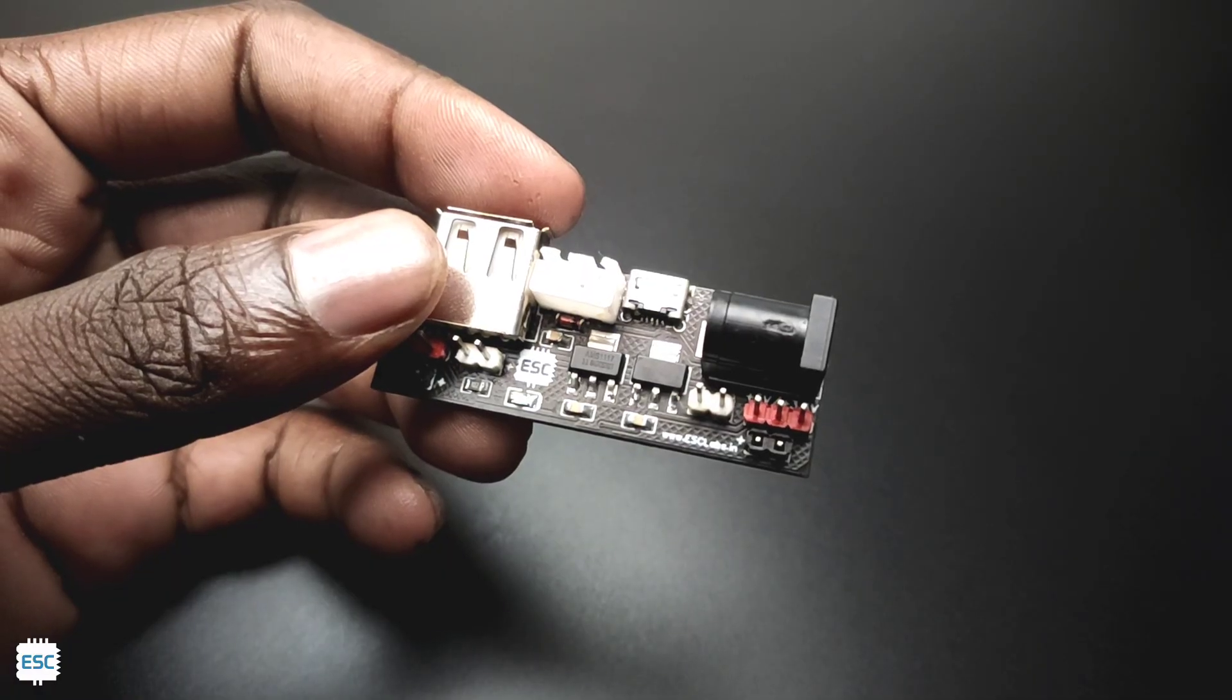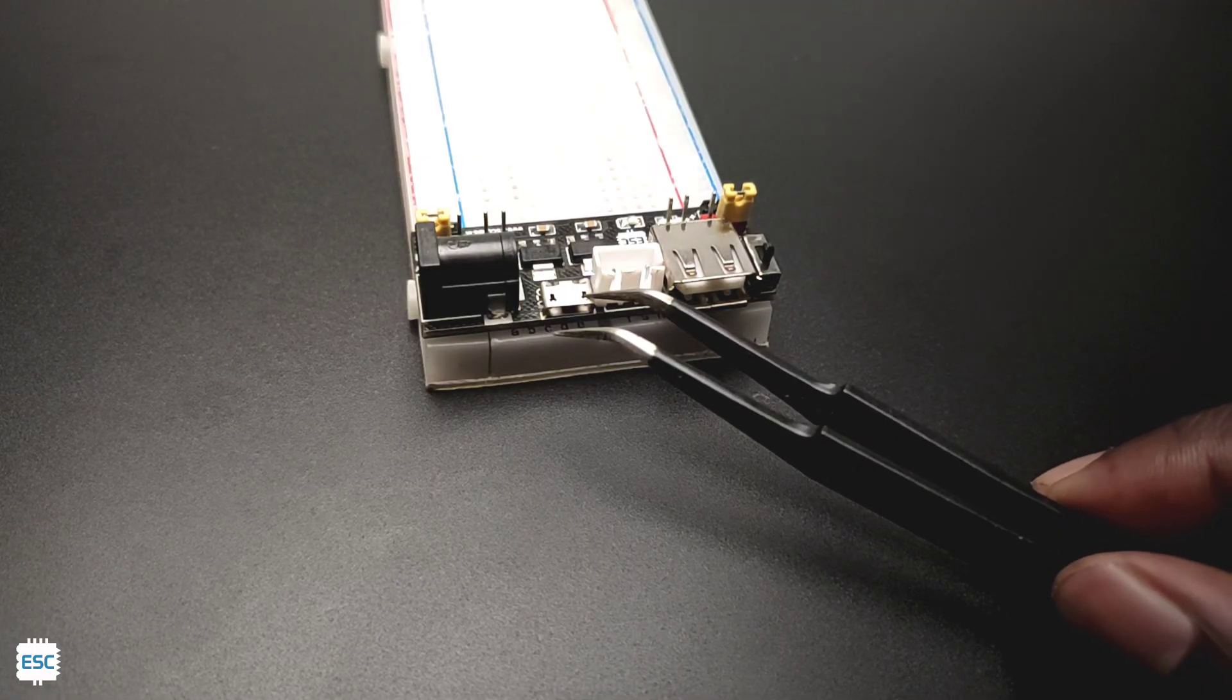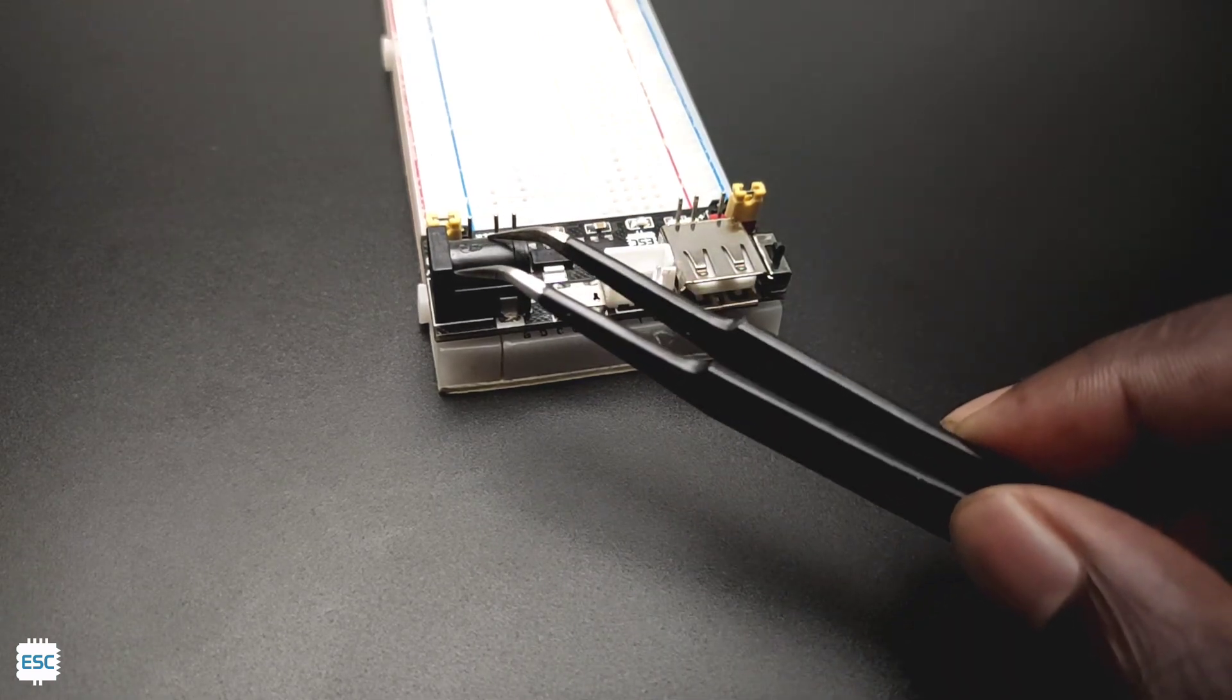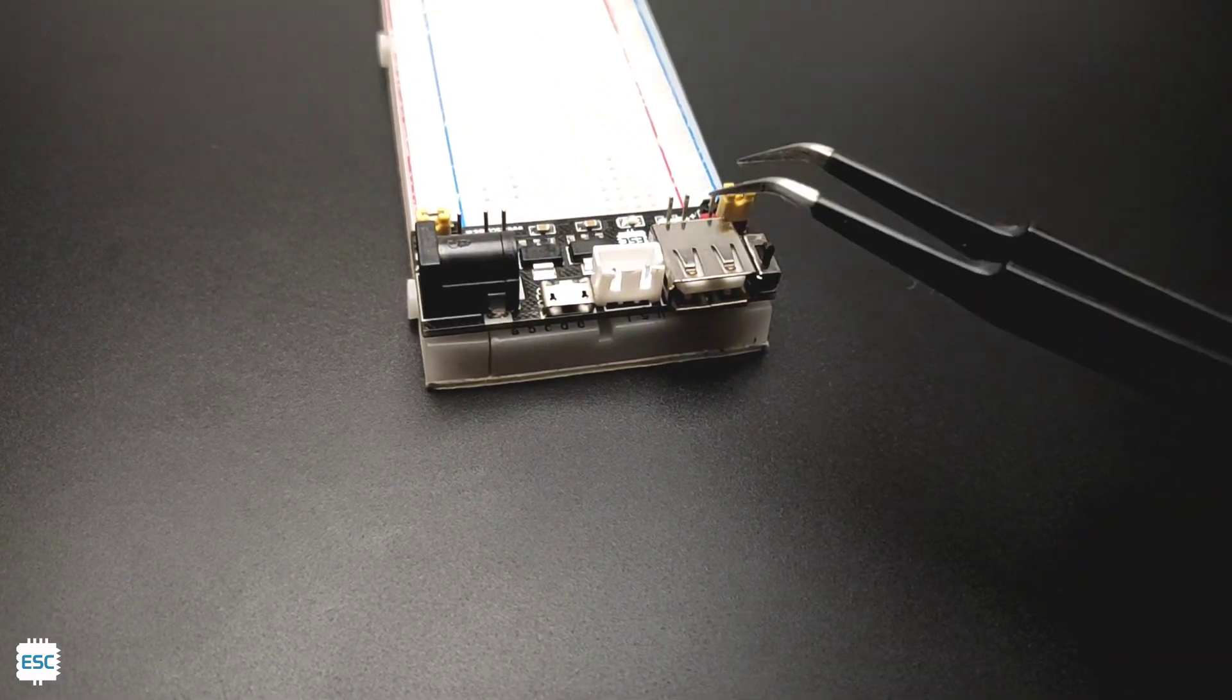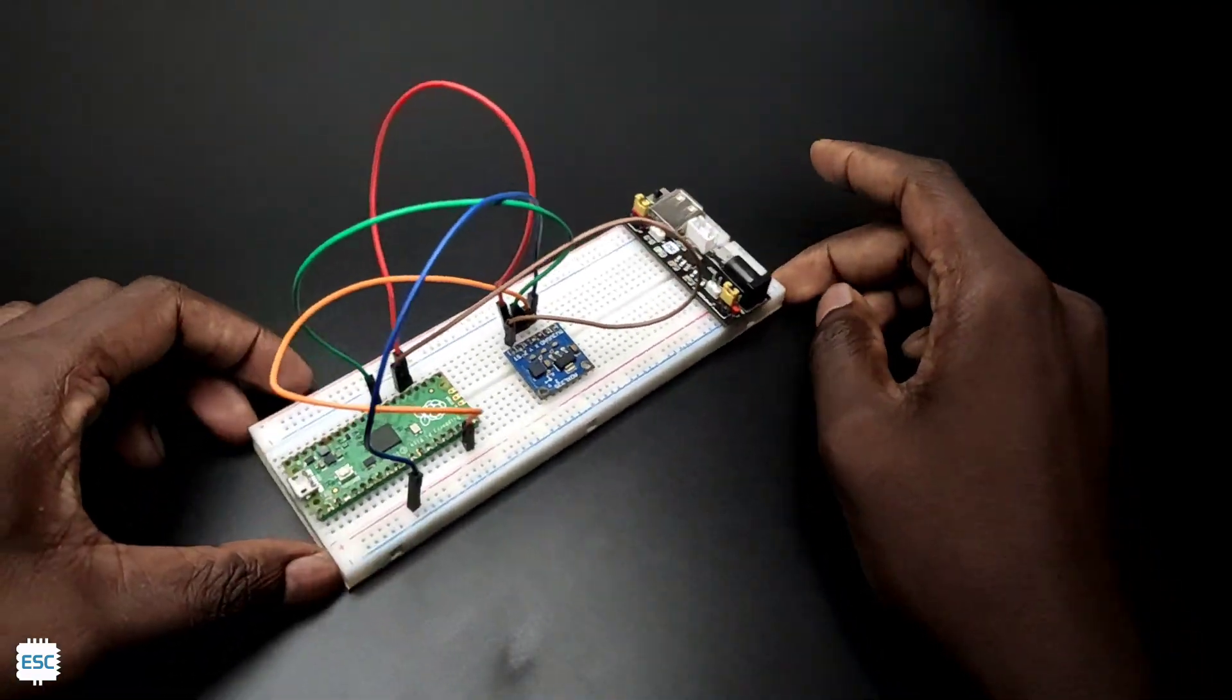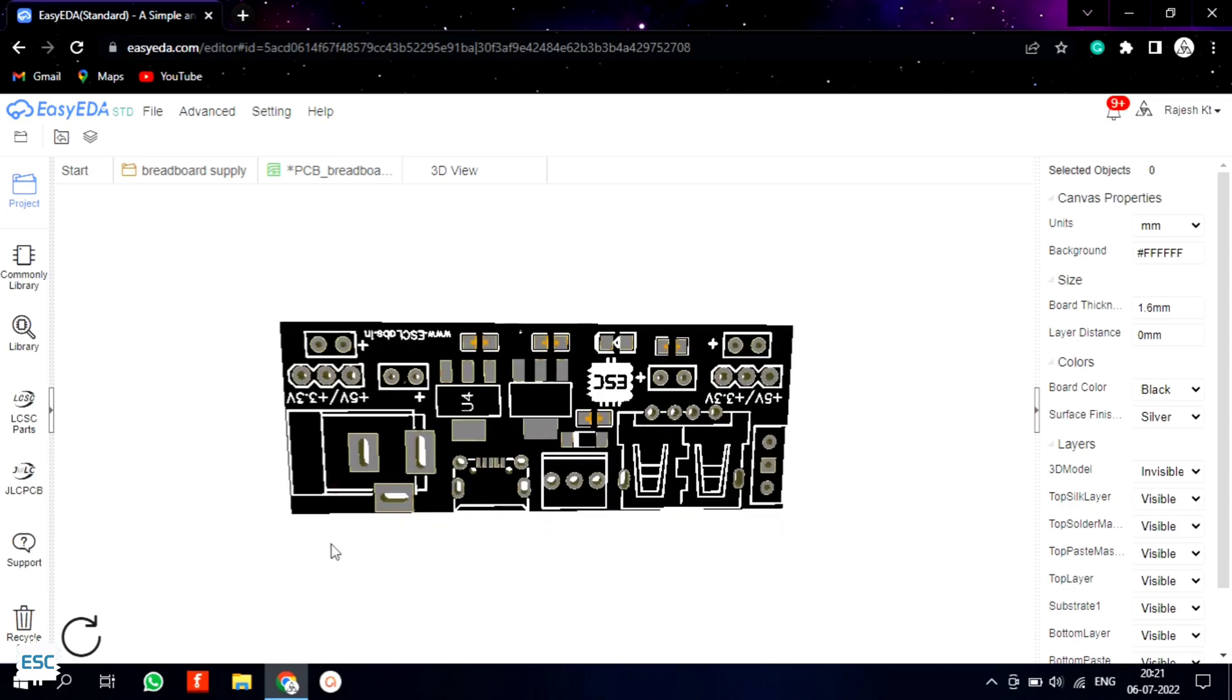So here it is. We can set the output voltage by selecting the jumper connector. Here we can use a micro USB, an external battery, or barrel jack to input the power. Also we can use 5 volt USB output from the board. So in this video I'm going to show you how to make this breadboard power supply. Let's get started.